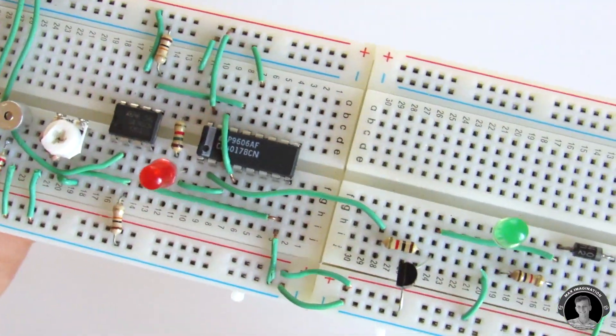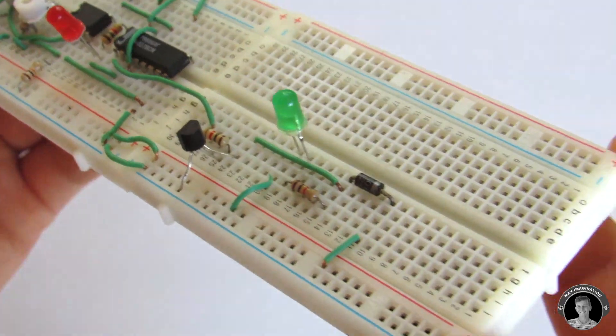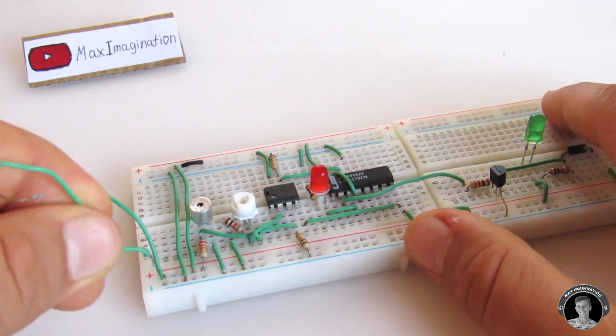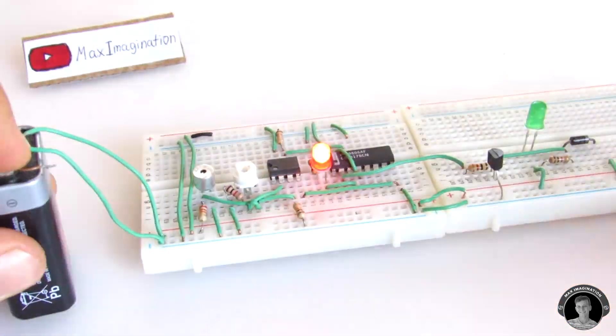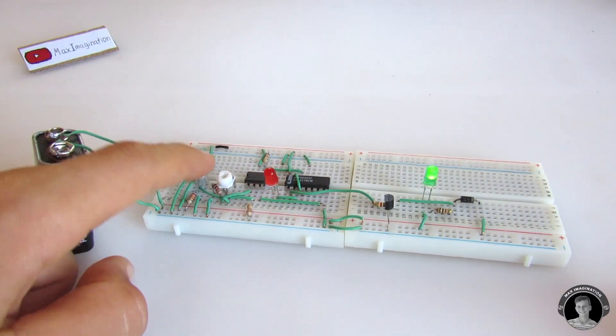Now we're done with making this clap switch circuit on a breadboard. Time to hook up a 9V battery to it. Keep in mind that the polarities of the battery should match up with what's said on the breadboard. Anyway, let's test it out.